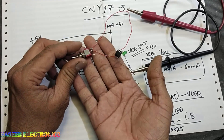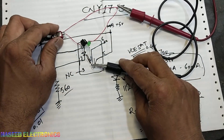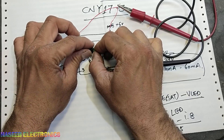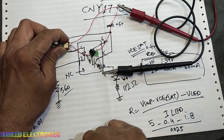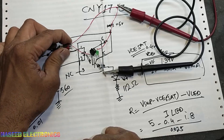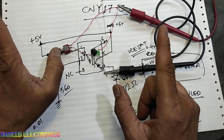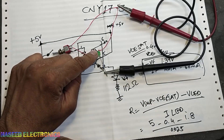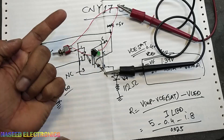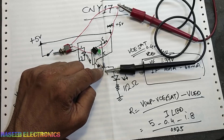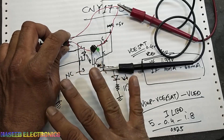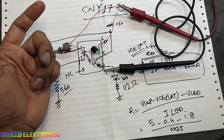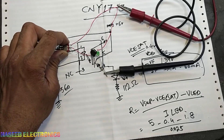When we push the button, the output LED turns on — this means the optocoupler is good. If the LED does not turn on, the optocoupler is bad, meaning the internal LED or transistor has failed. If the LED turns on directly without pressing the button, the internal transistor is short-circuited and must be replaced. This method works for any optocoupler: 4-pin, 6-pin, 8-pin, or DIP package.